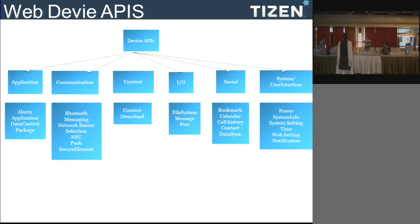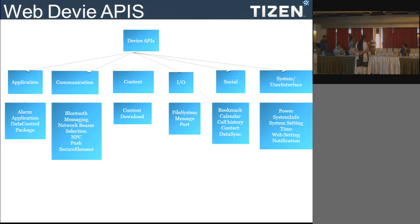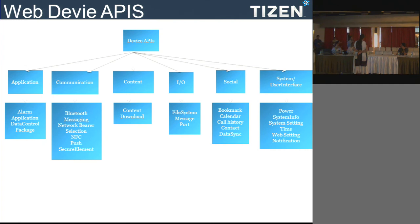There are three levels of privilege: public privilege, partner privilege, and platform privilege. Public privilege is open for all developers — they can use public APIs by declaring them in the manifest config file. Partner-specific privilege is given only to developers considered business partners. If privileges are not properly mentioned in the manifest config file, the Tizen platform will not allow the app to run.